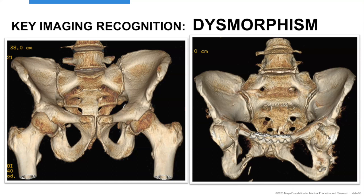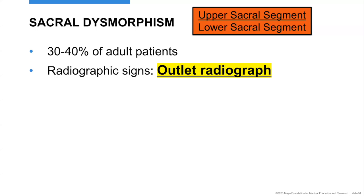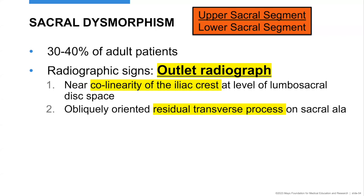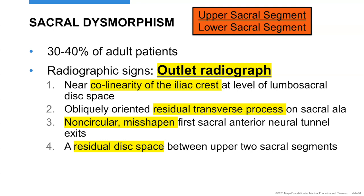Regarding dysmorphism — this is what we call it in trauma surgery — it is critical to recognize a dysmorphic sacrum when putting in implants, because this is where I see the most neurovascular injuries, from failure to recognize transitional segments. We simply refer to them as upper and lower sacral segments. Dysmorphism is really common, and you have to get the outlet radiograph to determine what is a dysmorphic sacrum. There are five criteria: collinearity with the iliac crest at the level of the lumbosacral junction disc space, obliquely oriented residual transverse processes, and bizarrely shaped sacral neural tunnel exits.